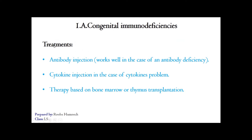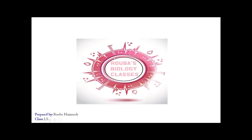What are the treatments for congenital immunodeficiencies? If we have an antibody deficiency, we can inject antibodies. If there are cytokine or interleukin problems, we may inject cytokines. But in most cases the therapy is based on bone marrow transplantation or thymus transplantation. This video explains the causes, characteristics, and treatments of congenital immunodeficiencies. In the next video we will be explaining the acquired immunodeficiencies. Thanks for listening.